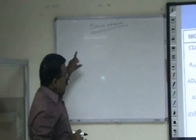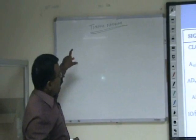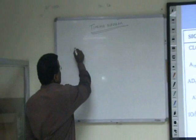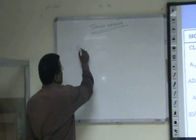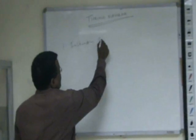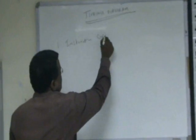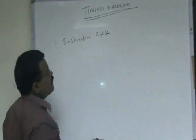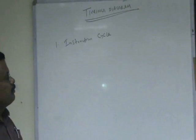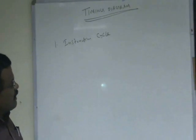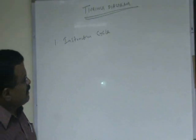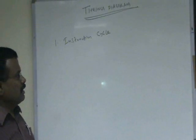Some terminologies should be known before we discuss this timing diagram. Number one is the instruction cycle. The time taken to execute one instruction is known as the instruction cycle. The instruction cycle consists of two cycles: one is the fetch cycle, and another one is the execution cycle.